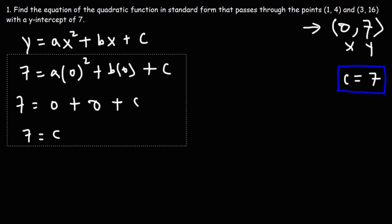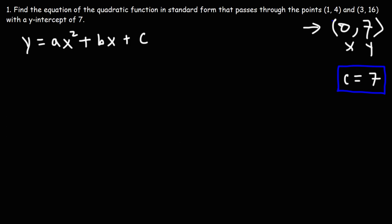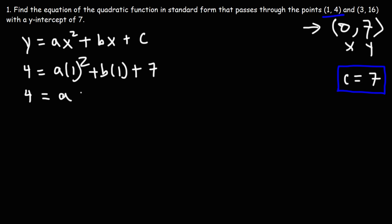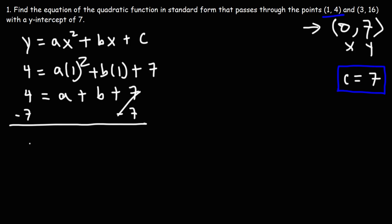Now let's use the other two points to determine a and b. Let's start with the point (1, 4). Let's replace y with 4 and x with 1. And c, we know it's 7, so we can put that in. 1 squared is 1 times a — that's just a. b times 1 is just b. Now I want to get all numbers besides a and b on the other side, so I want to subtract both sides by 7. 4 minus 7 is negative 3. We get negative 3 is equal to a plus b.